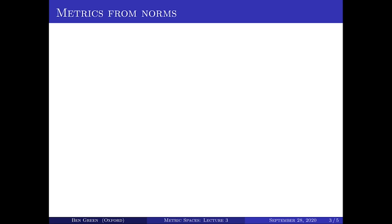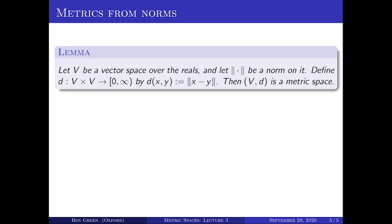That inequality — the fact that the Euclidean norm is indeed a norm, with norm of X plus Y bounded above by norm of X plus norm of Y — led fairly immediately to a proof of the triangle inequality for the Euclidean metric, the D2 distance. And in much the same way, given an arbitrary norm, you can use it to define a metric on that vector space V. If V is a vector space over the reals with a norm, you can define a distance function from V cross V to the non-negative reals by defining the distance between X and Y to be the norm of X minus Y.